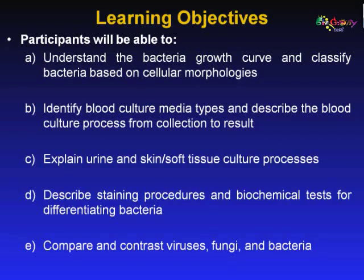I will then move on to describe blood, urine, and skin and soft tissue cultures, focusing on the types of media, sample collection processes, culture procedures, as well as speciation and susceptibility testing. I will proceed to explain basic staining procedures such as the simple stain, gram stain, spore stain, negative stain, and acid-fast stains. Included in the staining procedure descriptions will be explanations of the organisms that the stains identify. Biochemical tests used for differentiating bacteria will be discussed. Lastly, I will briefly mention some facts about fungi and viruses, focusing on the current 2009 novel H1N1 influenza pandemic.